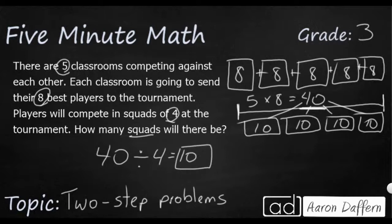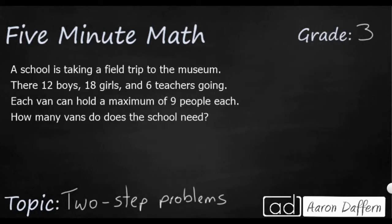Let's look at one last example. So for our final problem, we have a school taking a field trip to a museum. We've got three numbers here. We've got 12 boys, 18 girls, and then there's six teachers supervising. And then we need to put those into vans, and each van can hold a total of nine people.